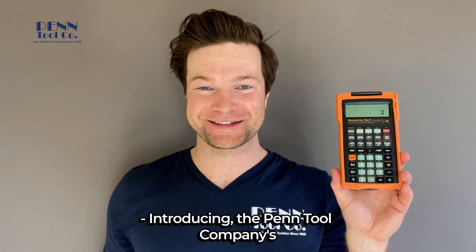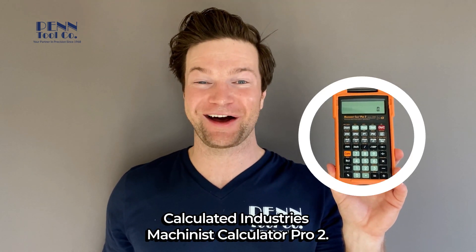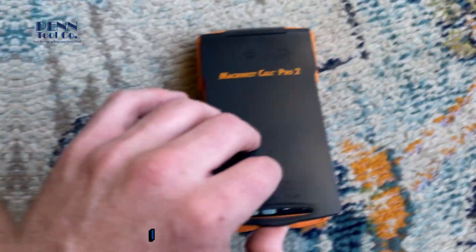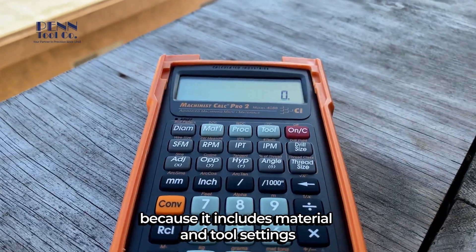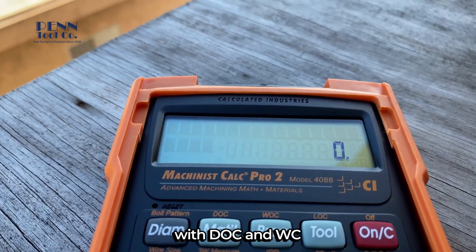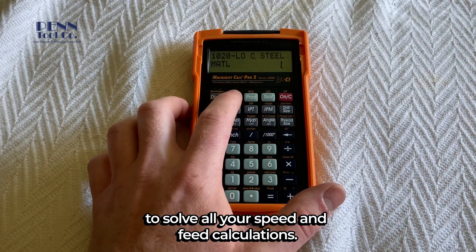Introducing the Penn Tool Company's Calculated Industries Machinist Calculator Pro 2. I decided to give this a go because it includes material and tool settings with DOC and WC to solve all your speed and feed calculations.